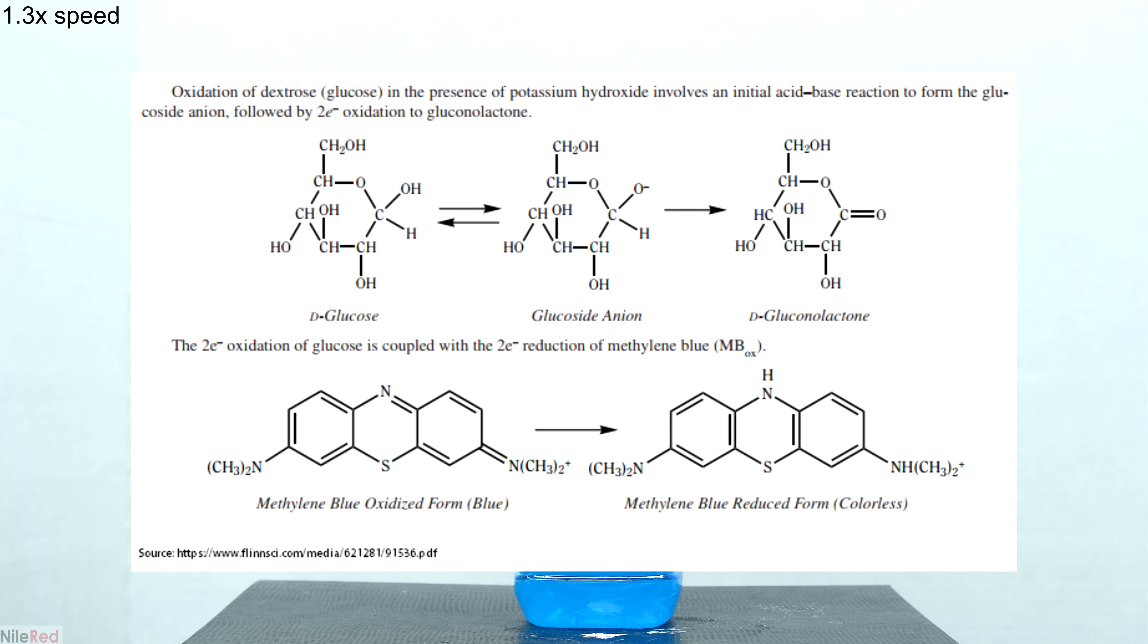Now to just go into a little bit more detail I've pulled a diagram from a PDF I found online. At the top of the diagram we see the reaction that the dextrose undergoes. An alternative name for dextrose is D-glucose and I think they just use the term glucose here because it's easier to name the intermediates. Anyway, under the basic conditions of the potassium hydroxide the glucose undergoes an acid base reaction to form the glucoside anion. The glucoside anion then undergoes a two electron oxidation to form D-gluconolactone.